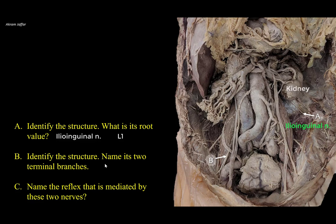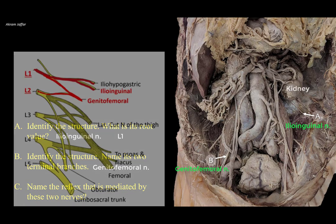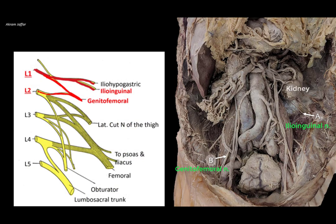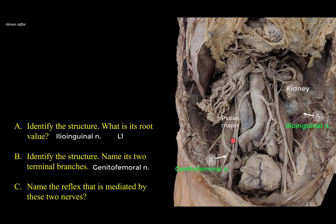Regarding nerve B, this is another branch of the lumbar plexus — the nerve that arises anterior to psoas major: the genitofemoral nerve, derived from L1 and L2. So it shares root value L1 with the ilioinguinal nerve. As it passes anterior to psoas, it is crossed by the ureter, and both are crossed by the gonadal vessels — the testicular or ovarian artery arising from the abdominal aorta, and the gonadal vein. On the right side, the gonadal vein drains into the inferior vena cava.